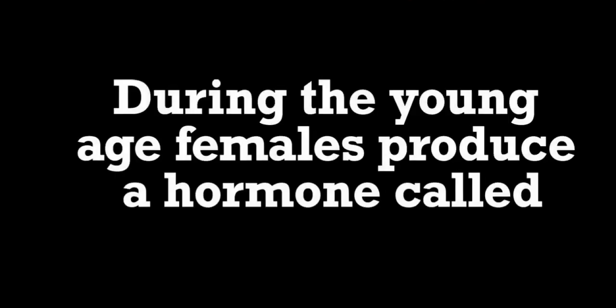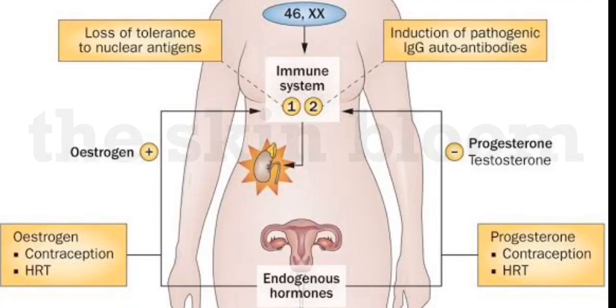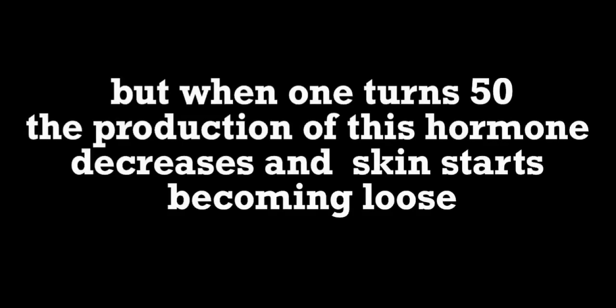During young age, females produce a hormone called oestrogen which keeps the skin blooming. At this age, elastin protein is also present in sufficient quantity, which maintains the elasticity of the skin. But when one turns 50, the production of this hormone decreases and skin starts becoming loose.